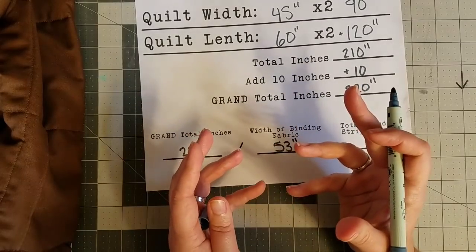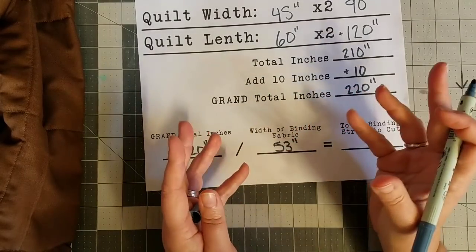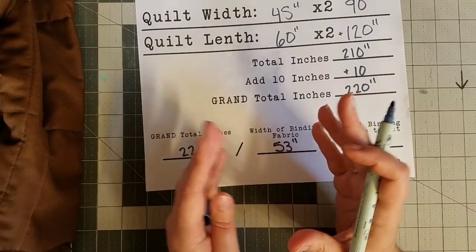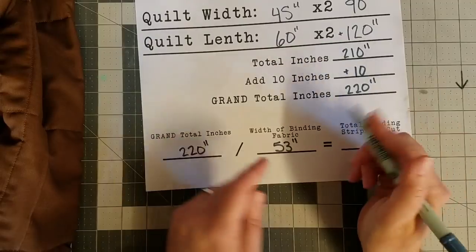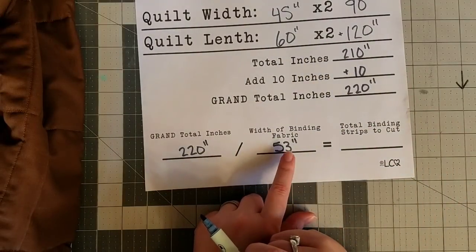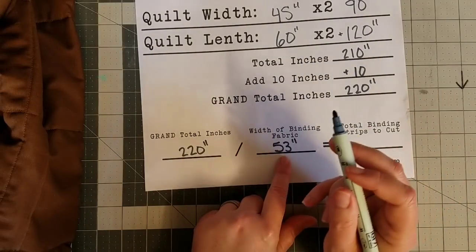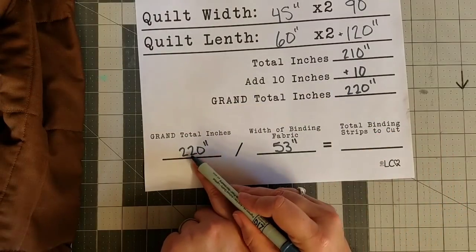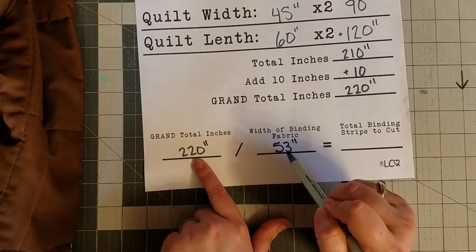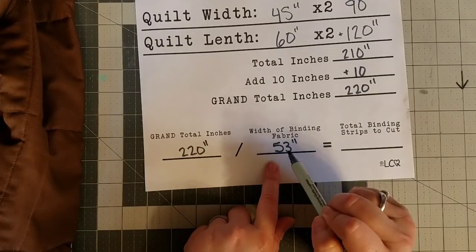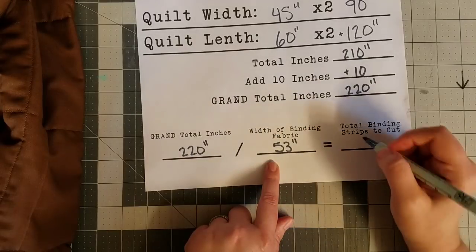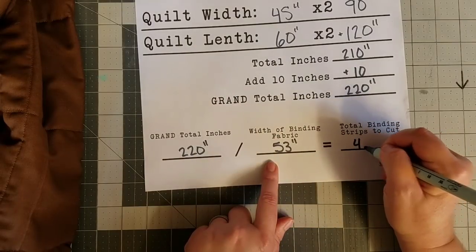Or sometimes I even put together scrap pieces of material and make binding from that. Whatever you're using, find out the total width of it and put it right in that section there. The last thing we're going to do is we're going to take our grand total inches, 220, and we're going to divide that by the width of our binding fabric before we cut it, and that is going to give us this number here.